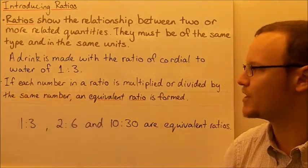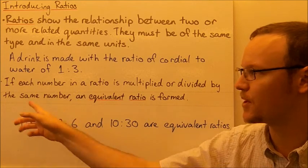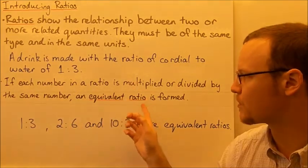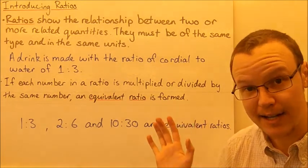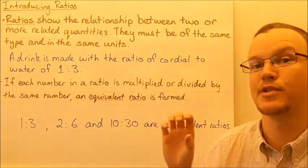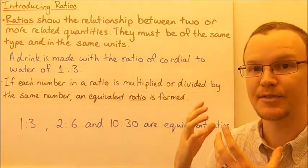If each number in a ratio is multiplied or divided by the same number, an equivalent ratio is formed. It's very similar to multiplying a fraction—multiplying the numerator or denominator by the same number gives an equivalent fraction.